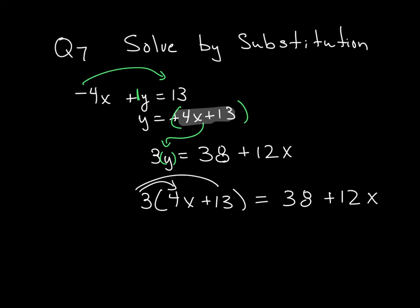I take and multiply my 3 to both of those, and 3 times 4 gives me 12x. And 3 times 13 gives me plus 39.